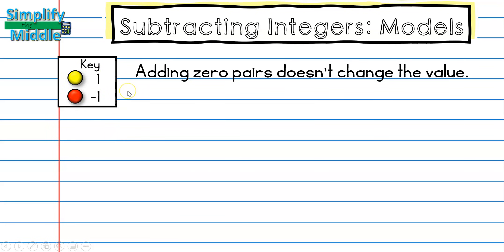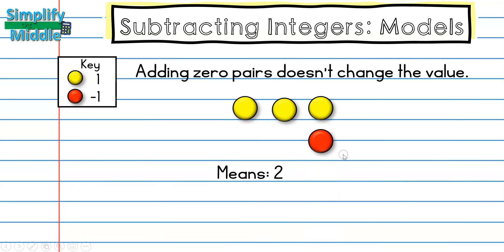Something we're going to be thinking about while working through subtracting integers with our counters is that when we add a zero pair, it's not going to change the value. Here I have two yellow counter chips, which just means I have 2. If I add a zero pair, although there are more chips, I still just have 2 because this really means 2 plus 0. That means I can add as many zero pairs as I want because I have not changed the value of the number. We're going to use that today when we're subtracting.